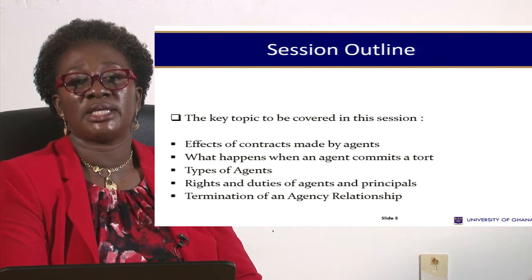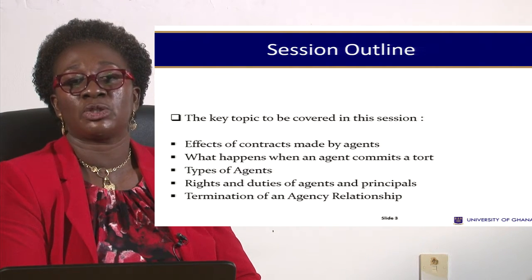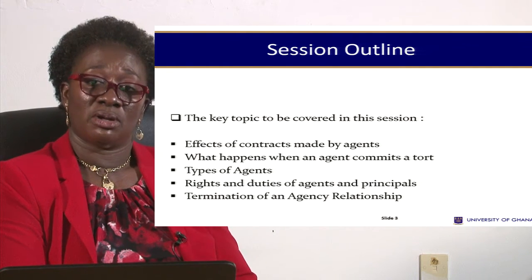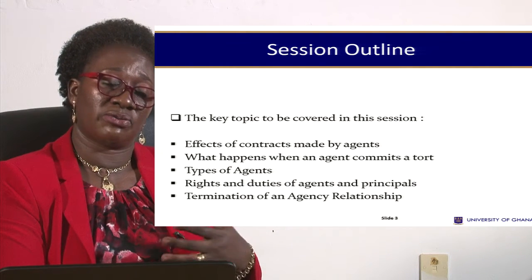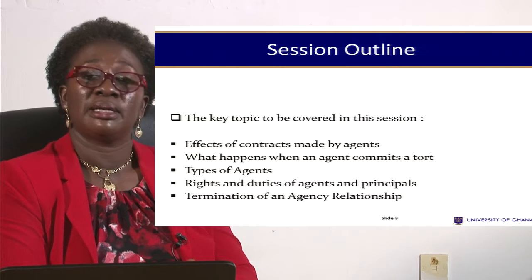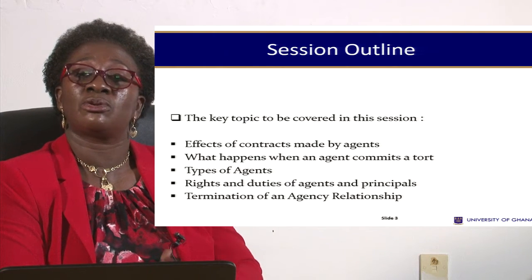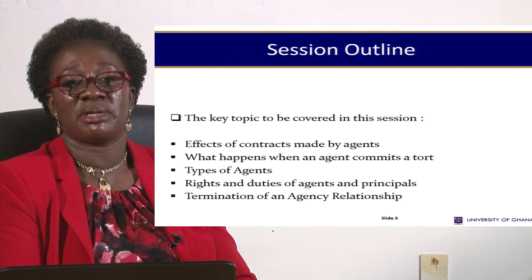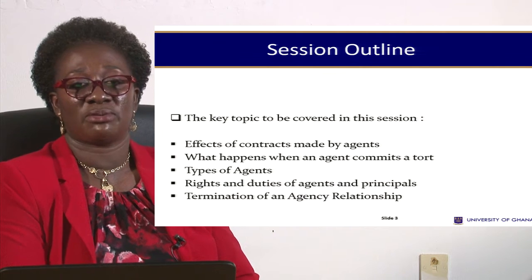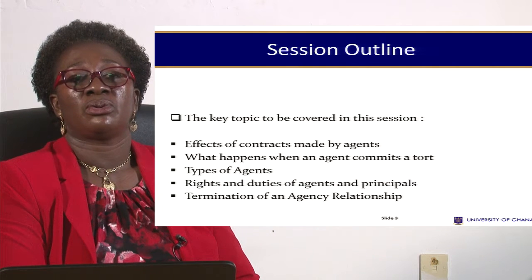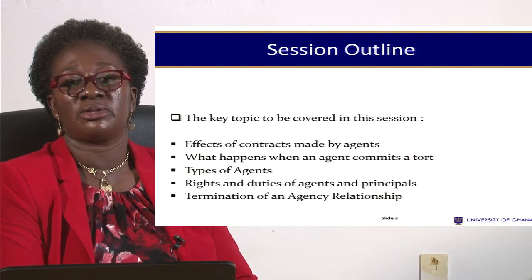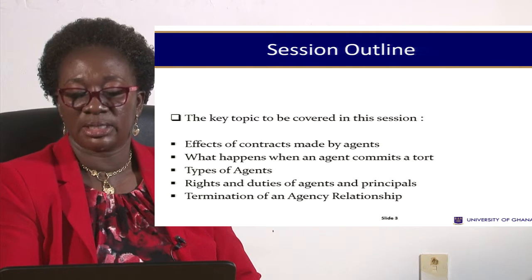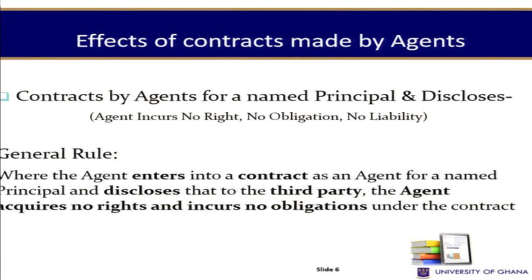What happens when an agent commits a tort? In the course of carrying out the instructions of the principal, the agent could cause harm to a third party. What is the effect of that? We'll also look at types of agents, rights and duties of the agent, and termination of an agency relationship.